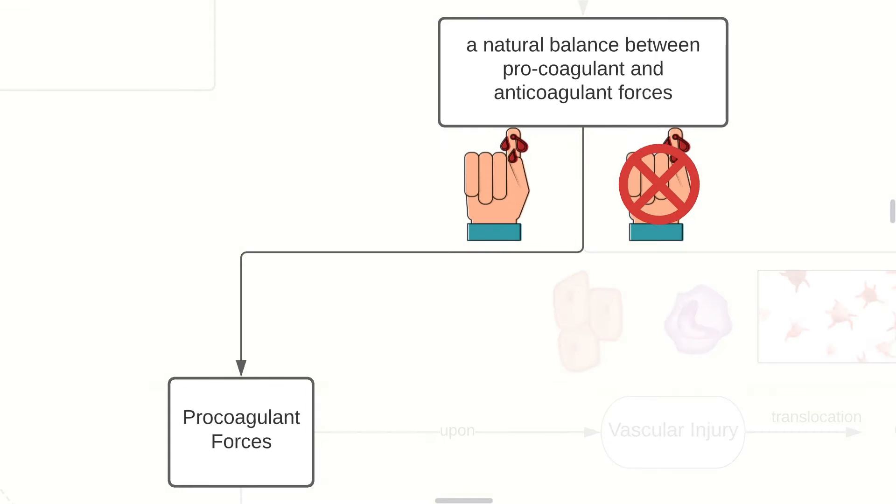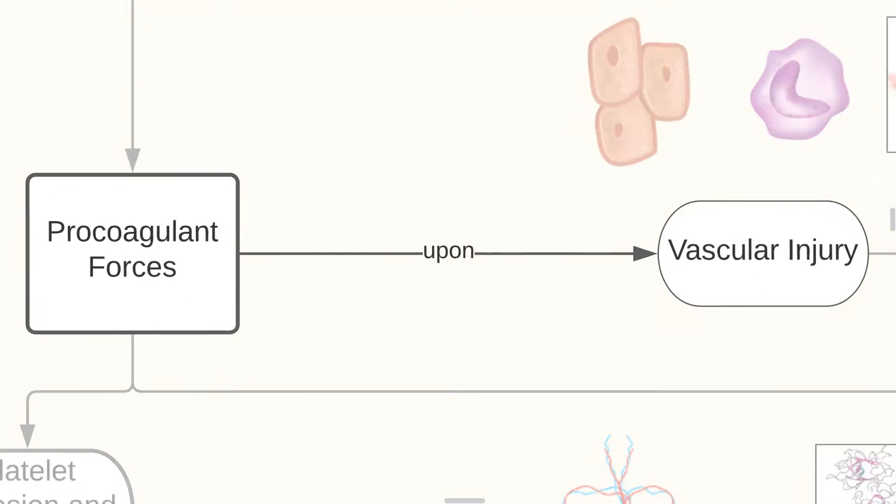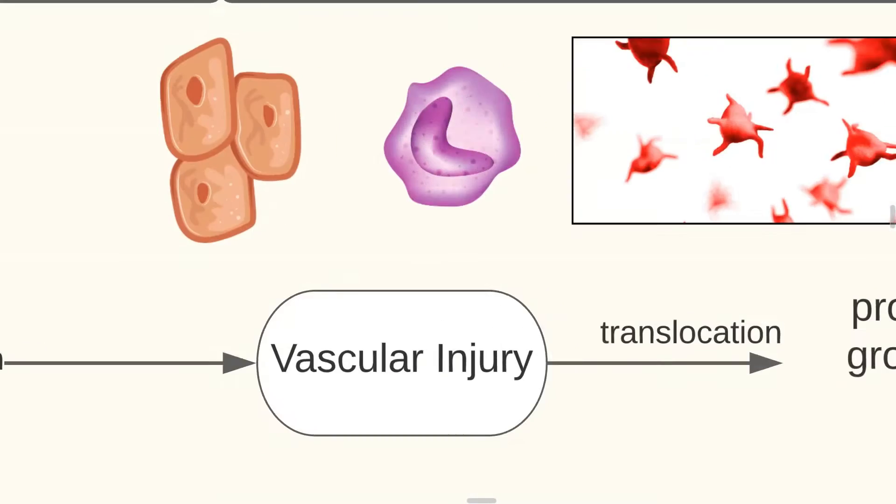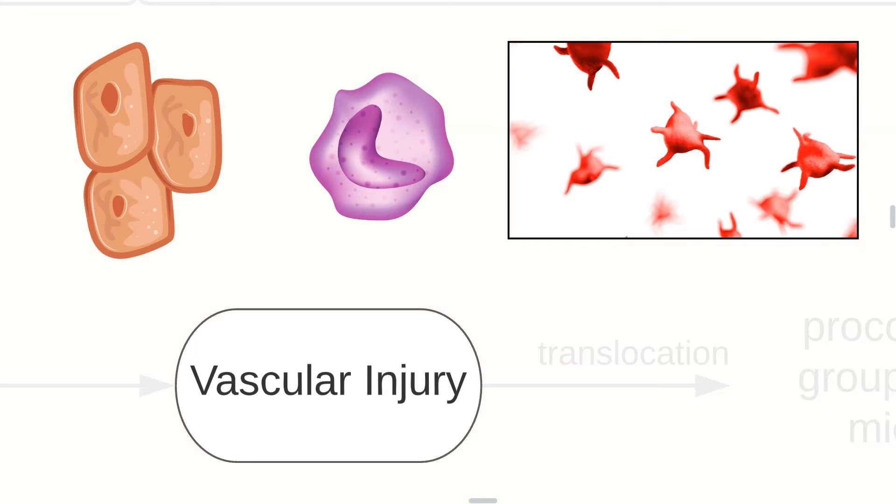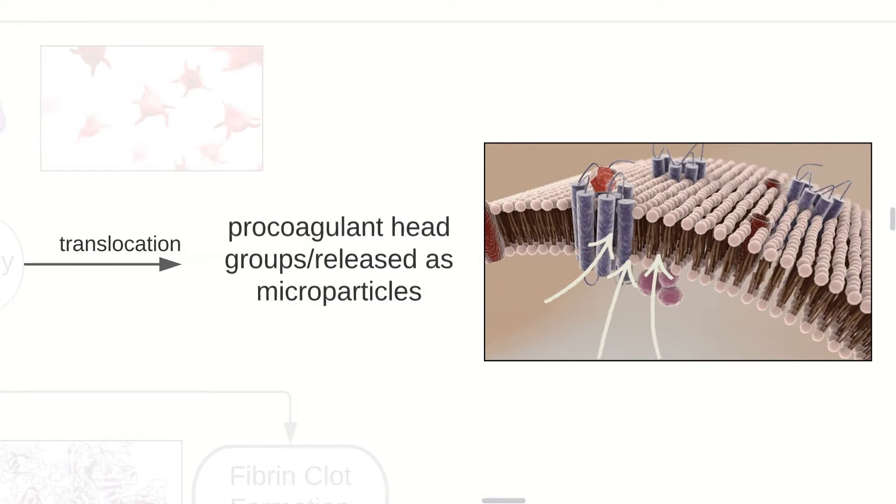Let's concentrate on the procoagulant forces. Upon vascular injury, the endothelial cells, monocytes, and the platelets themselves are activated. There's also a translocation of the procoagulant head groups, and there's release of microparticles, which provide further factors for coagulation.